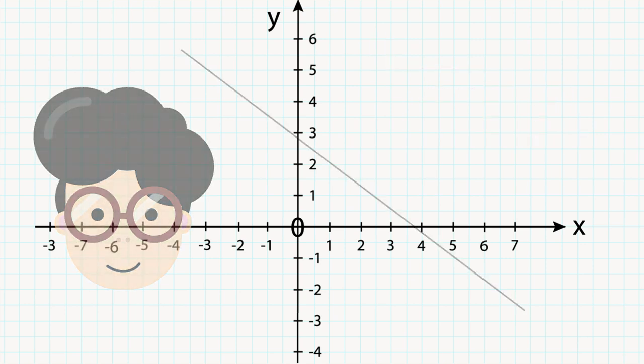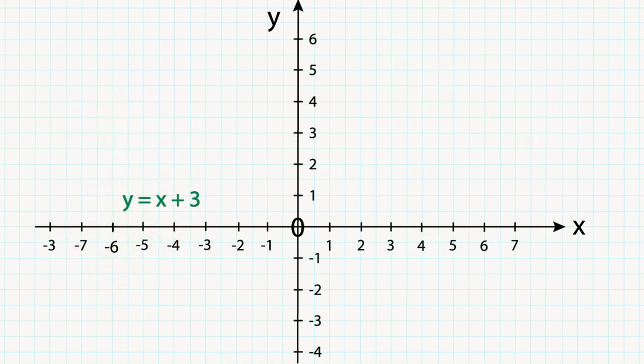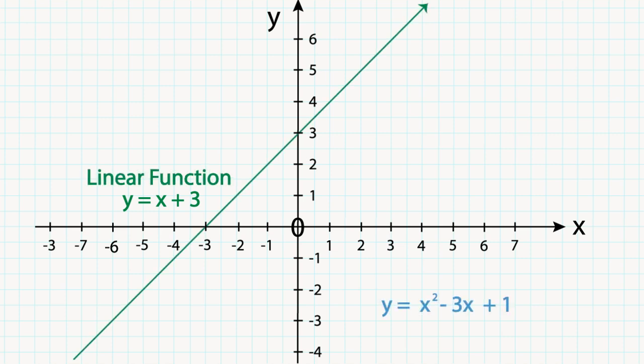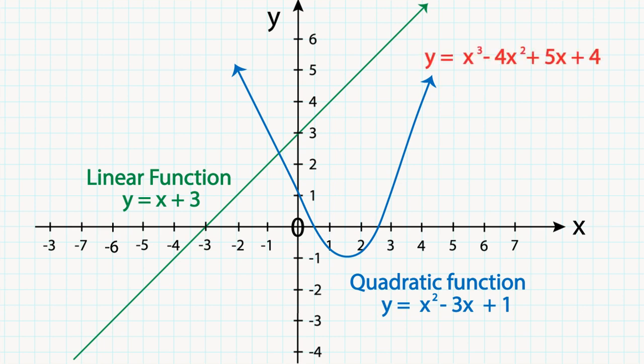For example, y equals x plus 3 is first degree and we call it a linear function. y equals x squared minus 3x plus 1 is second degree and we call it a quadratic function. y equals x cubed minus 4x squared plus 5x plus 4 is third degree and we call it a cubic function.